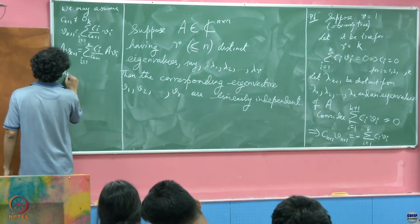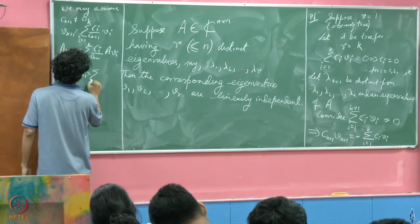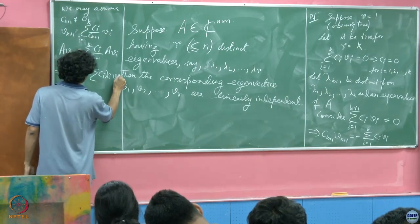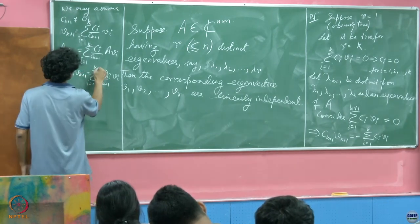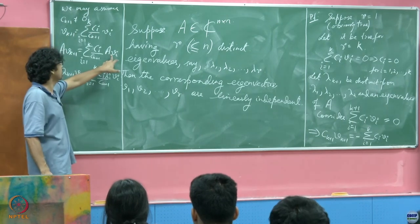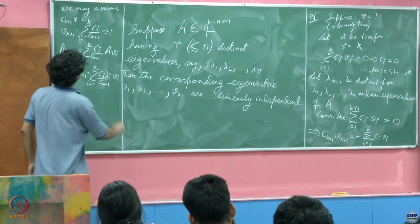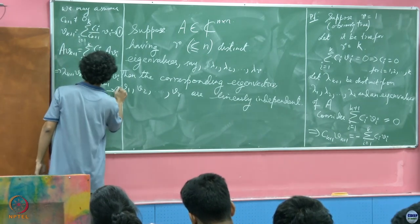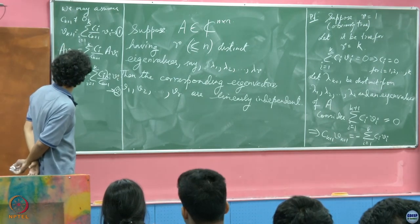What about the left hand side? These are all eigenvectors as well for lambda 1, lambda 2 till lambda k. So I am just going to replace A vi with lambda i vi. This gives summation ci by ck+1 lambda i vi. This is the expression from equation 1. So let us name this equation 1 and that equation 2.